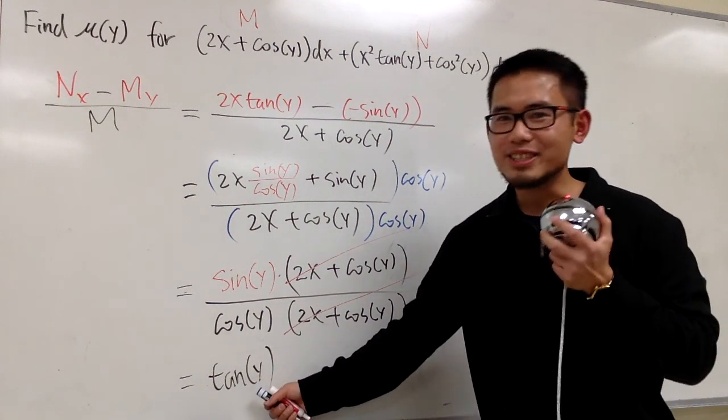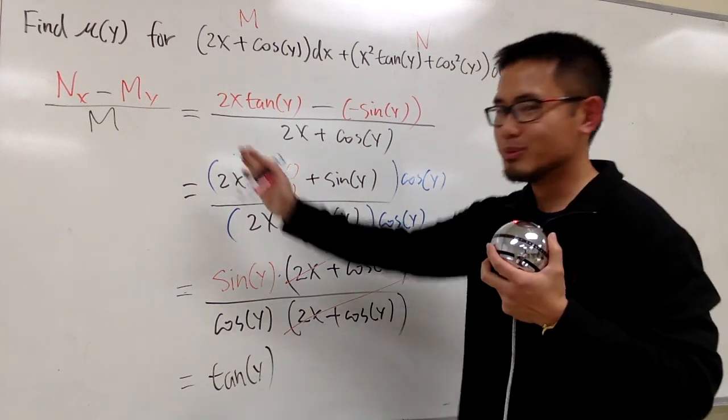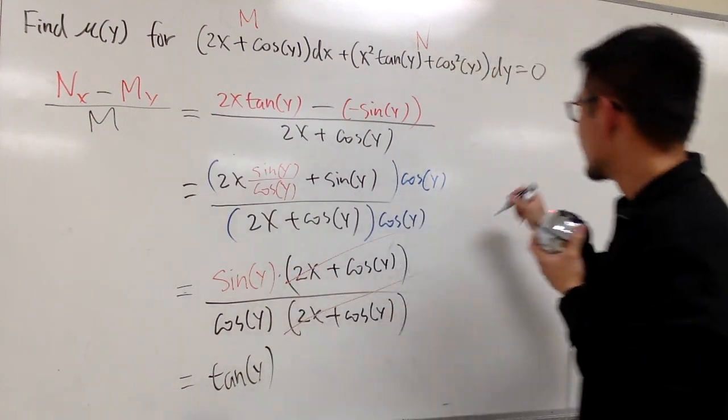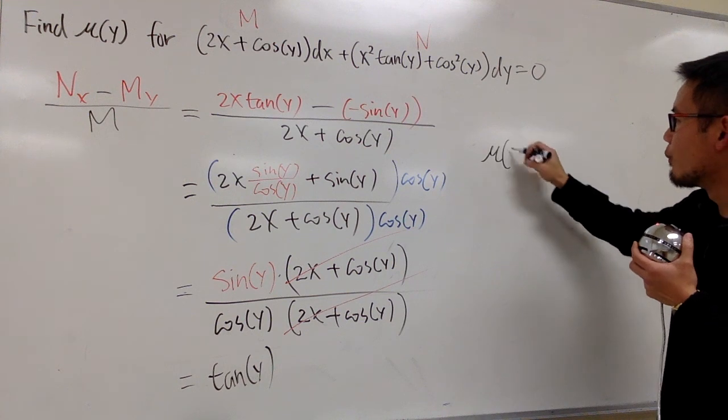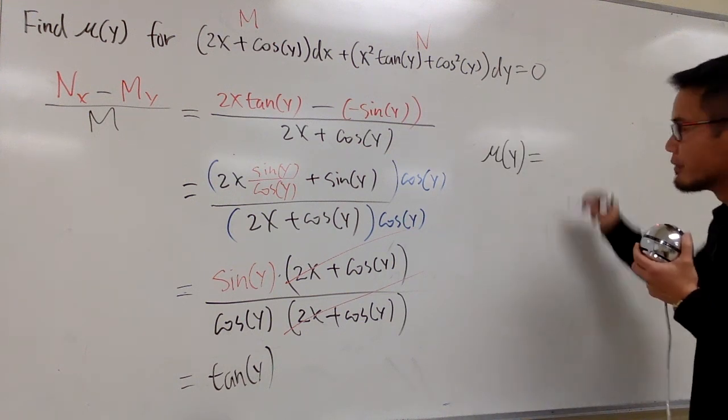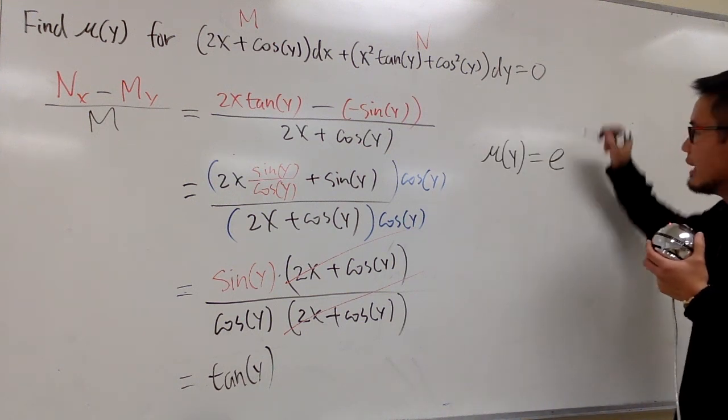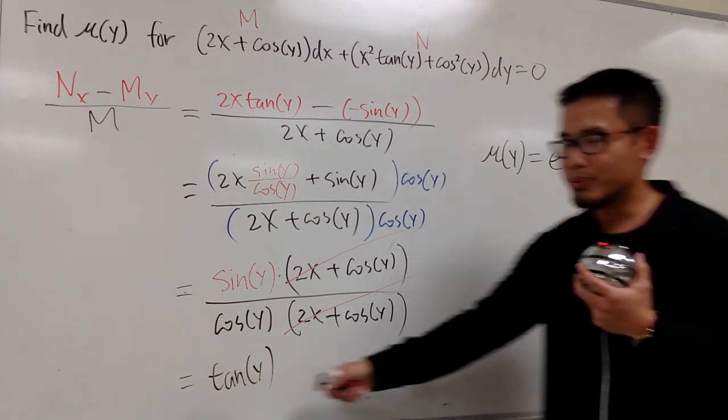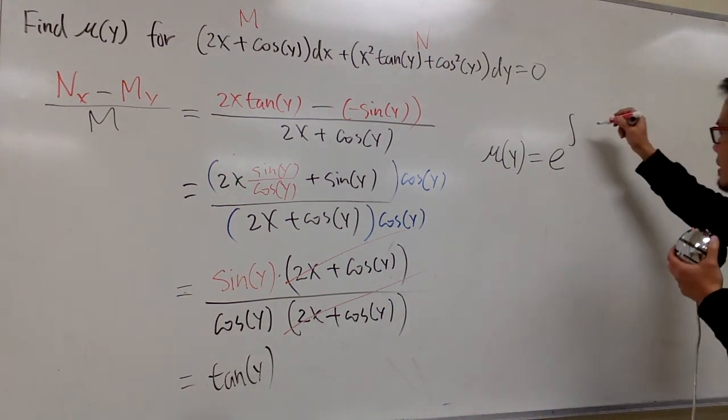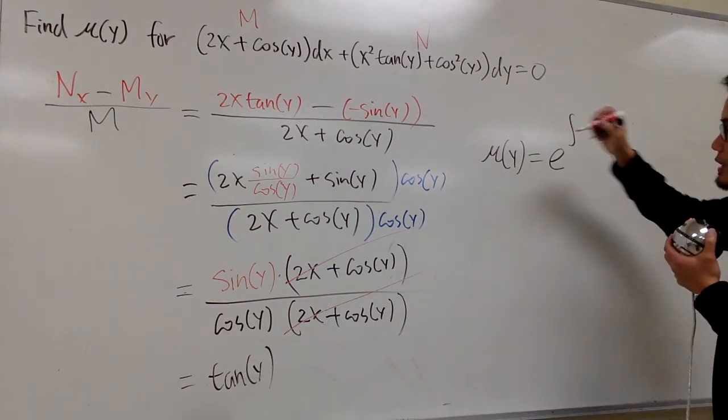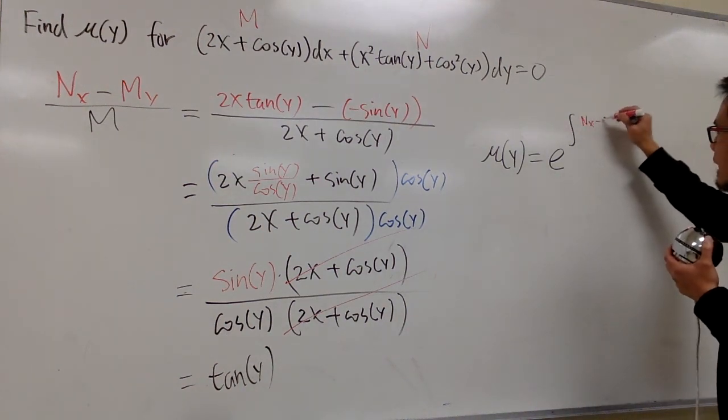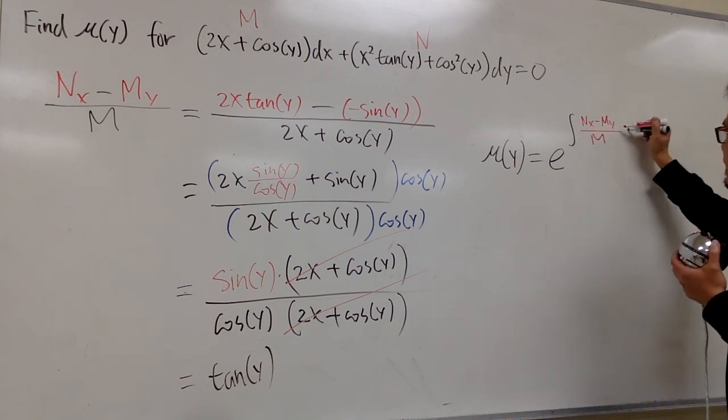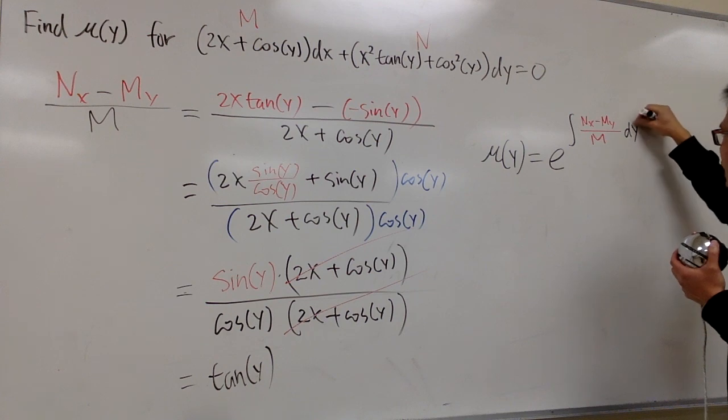Okay. This is just an expression in terms of y. And remember, for the special integrating factor, what you have to do is, mu of y is equal to e as the base, and then we have the integral. Inside here, we put down this. And let me just rewrite the formula again, just to be legitimate. We have to look at this, which is N sub x minus M sub y over the original N. And then we have dy right here.